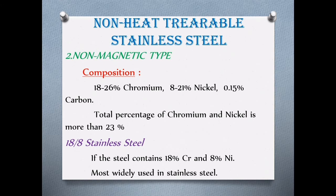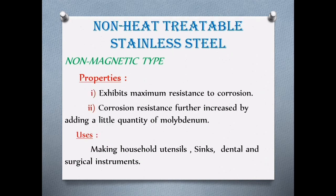The non-magnetic type contains chromium 18–26%, nickel 8–21%, and carbon 0.15%. This is the non-magnetic type, also known as 18/8 stainless steel, where chromium and nickel total above 23%. The properties include excellent corrosion resistance. Uses include utensils, sinks, dental instruments, and surgical instruments.